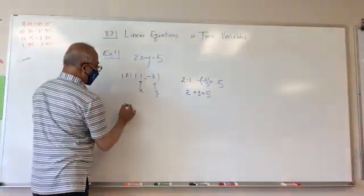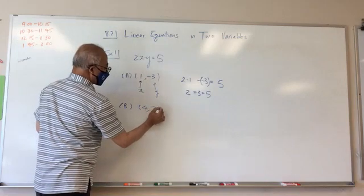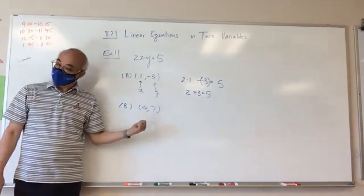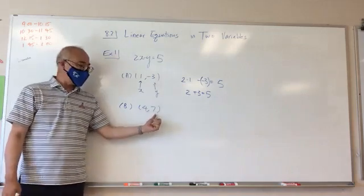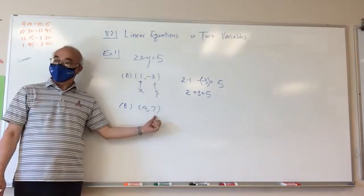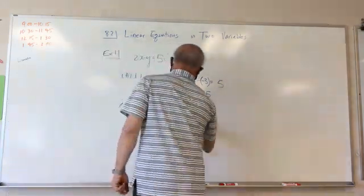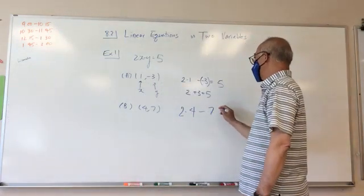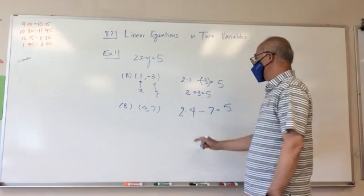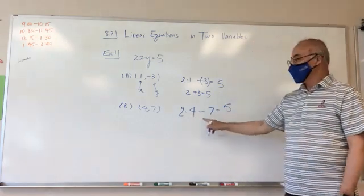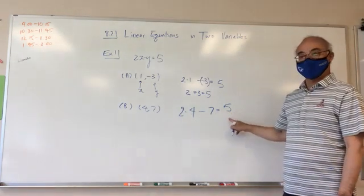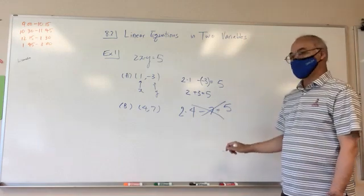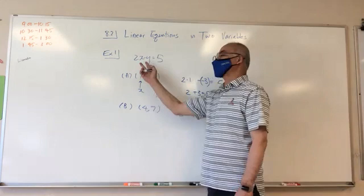In part B, I have the point (4, 7). The four is x and the seven is y. So where x is, I put four, and where y is, I put seven, and see if it equals five. I have two times four is eight, minus seven is one. That is not five, so this does not work — this is not a solution.